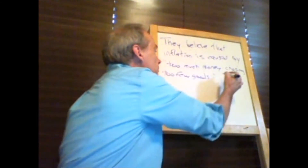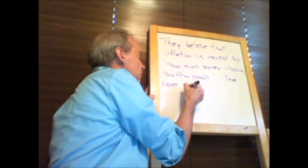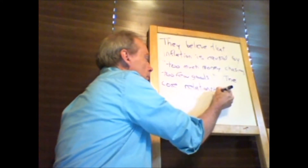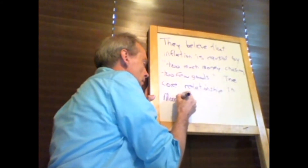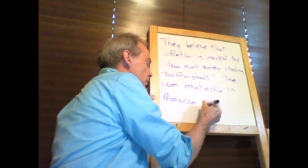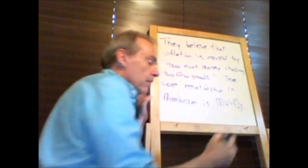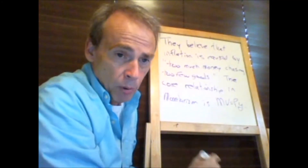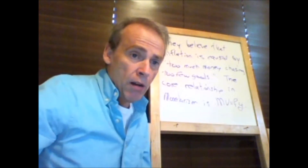The core relationship in monetarism is MV equals PY. And monetarism is a branch of neoclassicism — I guess I didn't point that out. I'm going to wait for a moment for you to get all that written down.